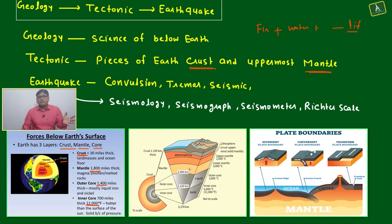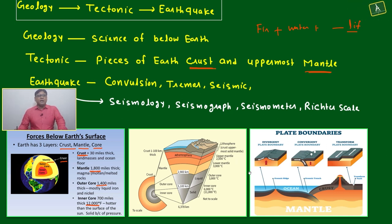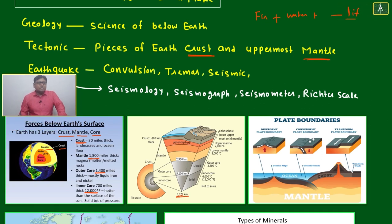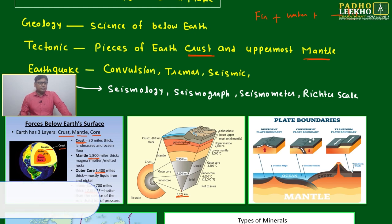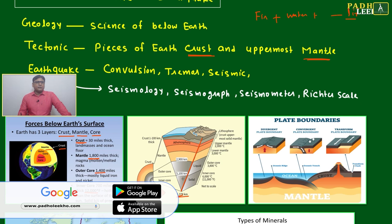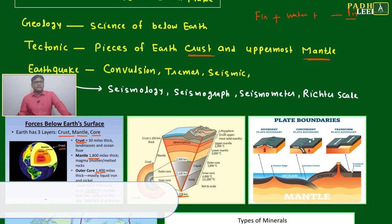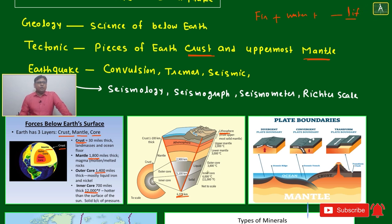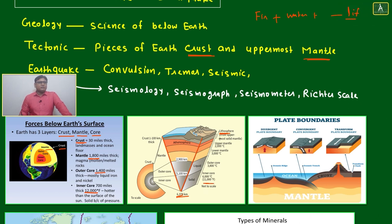This structure will be helpful to understand everything pertaining to below the Earth's surface. The radius of Earth is around 6000 kilometers. If you cut it like a cake, you can see the layers — this is called the lithosphere. The layers are: upper mantle, lower mantle, outer core, and inner core.